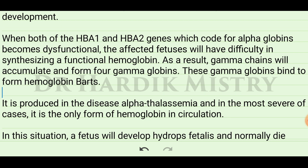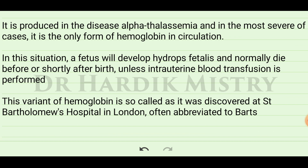To summarize, hemoglobin Barts is an abnormal hemoglobin in which only four gamma globulin chains are present. It has a high affinity for oxygen, causing it to fail to release oxygen at the tissue level. I hope you now understand hemoglobin Barts — if you found this helpful, please share it with your friends. Thank you.